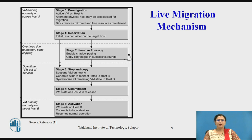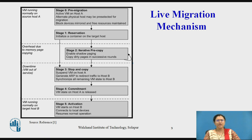Now we are in Stage 2, which we call the iterative pre-copy stage. During the first iteration, all pages are transferred from host A to host B. After subsequent iterations, only those pages that were dirtied during the previous phase of transfer are copied. This is the iterative pre-copy stage.